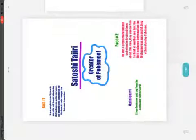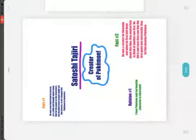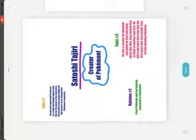I wrote right underneath it 'creator of Pokemon.' A couple things you're going to want to make sure you do: make sure to put the name of your person somewhere on there, nice and big, so when somebody looks at your pick board they know who your biography is about. Then underneath it you should really say why they're famous — that's why I wrote 'creator of Pokemon.'